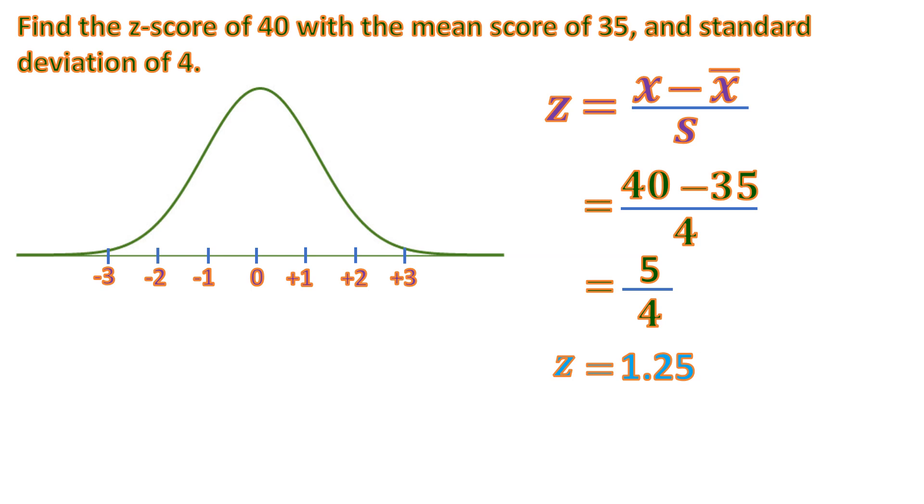And this is positive 1.25. So it's located here. It's 1 and 0.25. So that is where 1.25 is. And that means the value of 40 is located there in the normal curve.